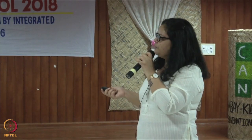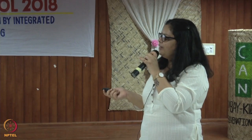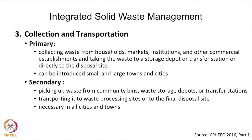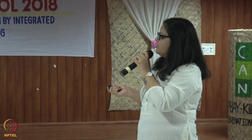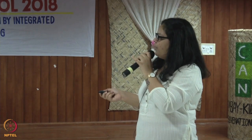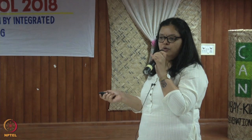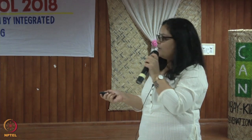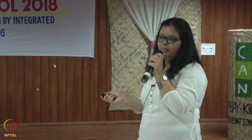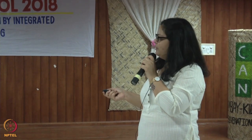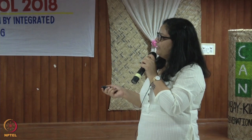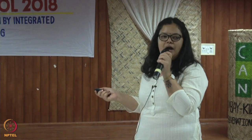For collection and transportation, there are two kinds of collection: primary and secondary. Primary collection is directly from the household or the producer. Secondary collection is from community bins, waste storage depots, and transfer stations. For example, in Halabi, households deposit their waste in a community bin and the municipality takes care of it from there. In other cities, collection happens at the household level.